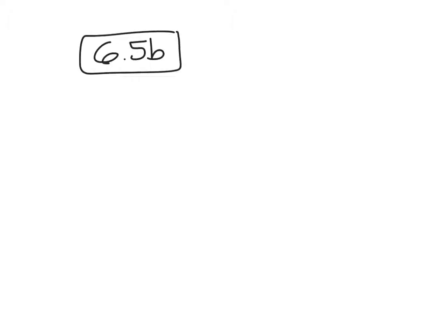All right, so we're going to continue — this is 6-5, 6-5b. We're going to do most of this on our calculator. I was thinking about this last night, if I should make you do some of this by hand, but we have calculators. All right, so we're going to talk about some specific polar graphs today. I've got some specific ones that the book likes.